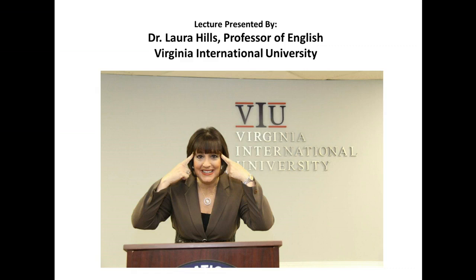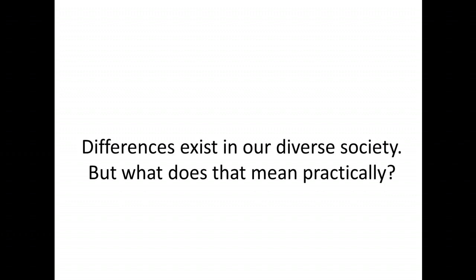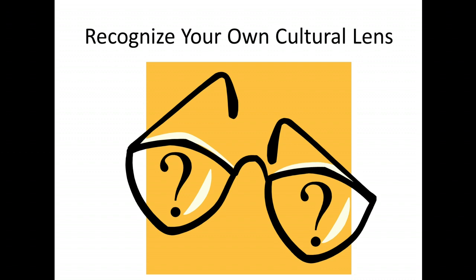Differences exist in our diverse society, but what does that mean practically? The most important lesson as an academic writer is that we approach every writing task through our own cultural lens. And that lens is often invisible to us. We don't readily realize that we are looking at the world through that lens. So becoming more sensitive to that lens — knowing I'm speaking here with an assumption from my own culture — is critical in academic writing.